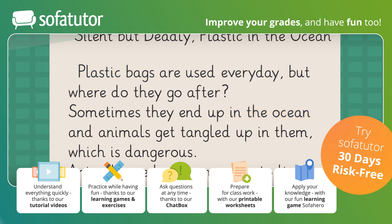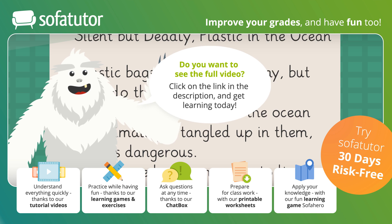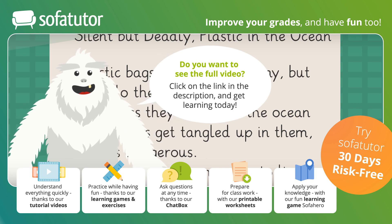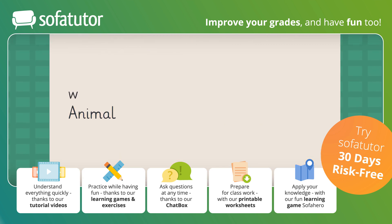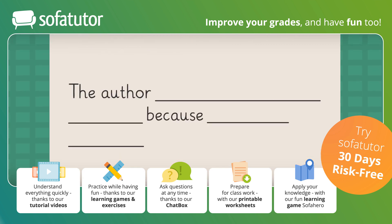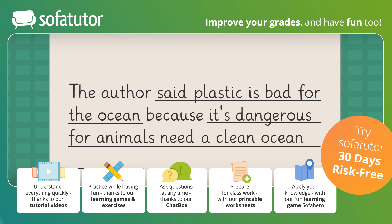Next, find the author's idea. Here, it is that plastic bags are bad for the ocean. Then, find a reason to support the idea by looking for words like should and need or good and bad. Can you find a reason that plastic bags are bad for the ocean? They are dangerous to the animals that need a clean ocean to live in. Finally, say the author's purpose and reason for writing. We can say: The author said plastic is bad for the ocean because it's dangerous for the animals that need a clean ocean to live in.